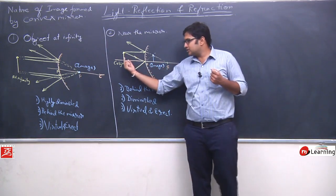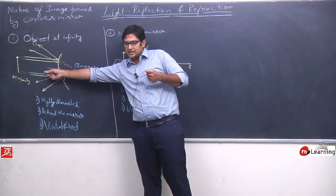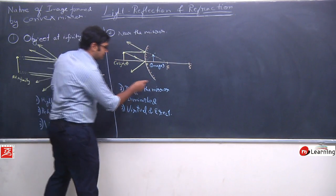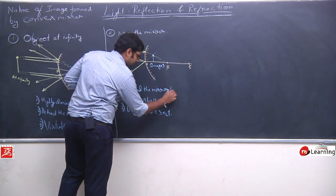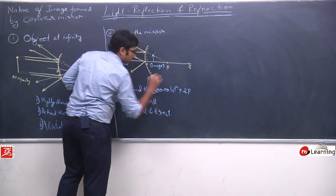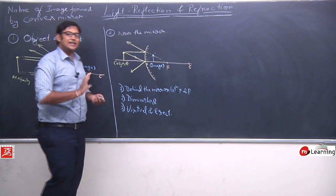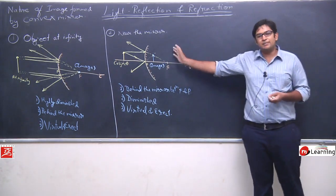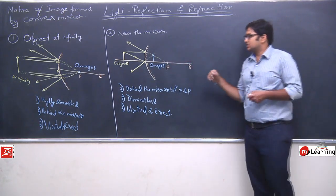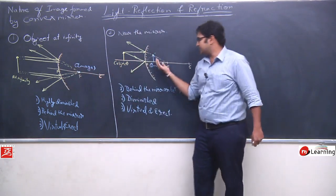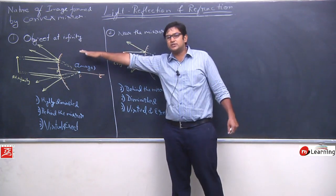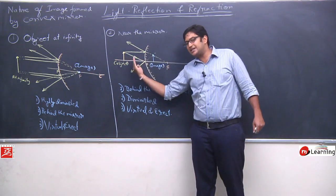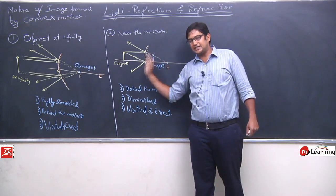How do we understand this? If I move the object to infinity, this case becomes the first case - and where will the image be? Right now it is between focus and pole. So we write: behind the mirror, between focus and pole. The image will not actually form at focus and pole - it will only appear as if an image is forming there. But if you look behind the mirror, you will see nothing. So as you move the object farther, the image keeps shifting toward focus, and finally when the object is at infinity, its image forms exactly at focus and is highly diminished.